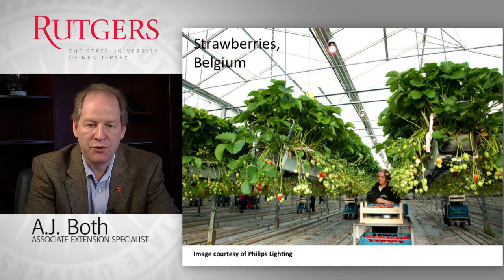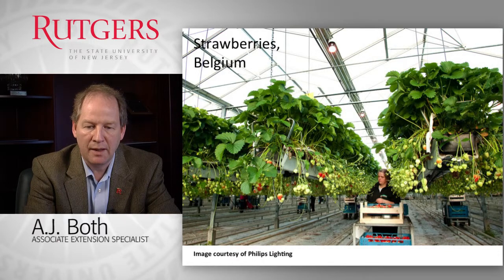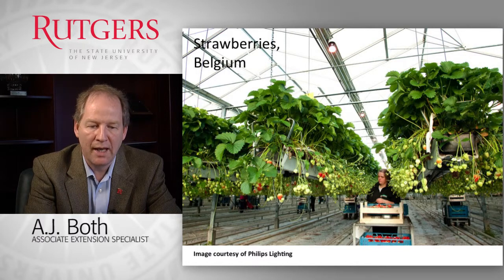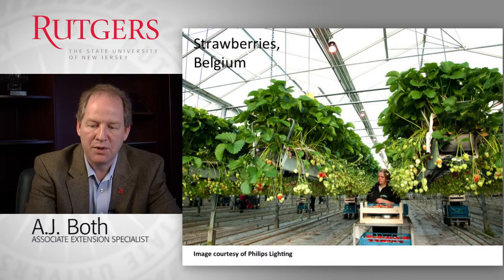Another example of strawberries, in this case in Belgium, where the troughs are raised to make it easier for workers to move between the plants and pick the berries. In this case the plants are also receiving photo-period lighting to induce flowering and thus berry production, using LED lamps specifically designed for this purpose.